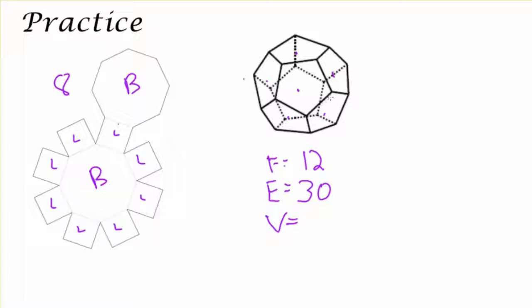And again, because so many of those vertices are shared by three pentagons, I can take that 60 divided by three and get a final answer of 20.